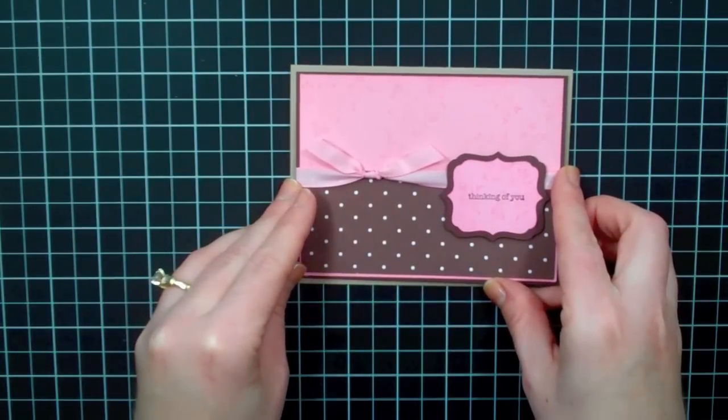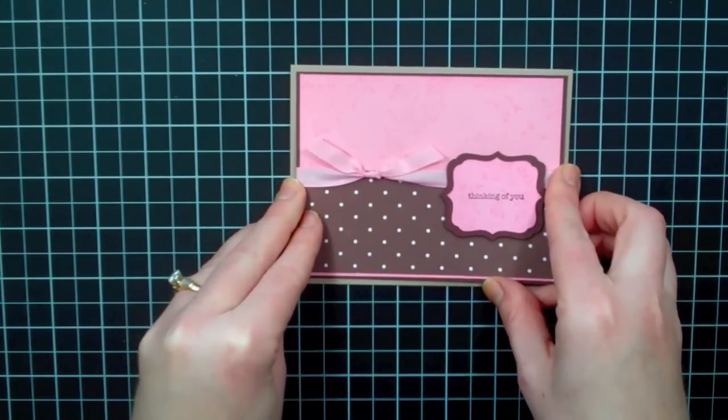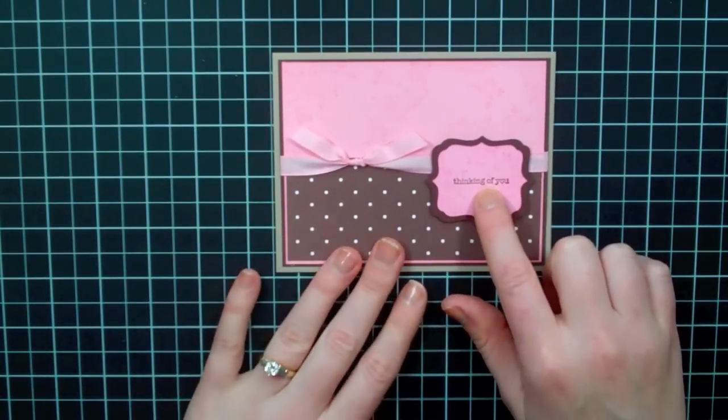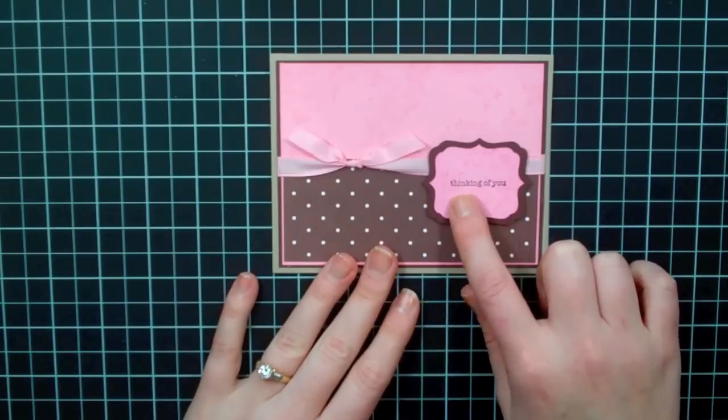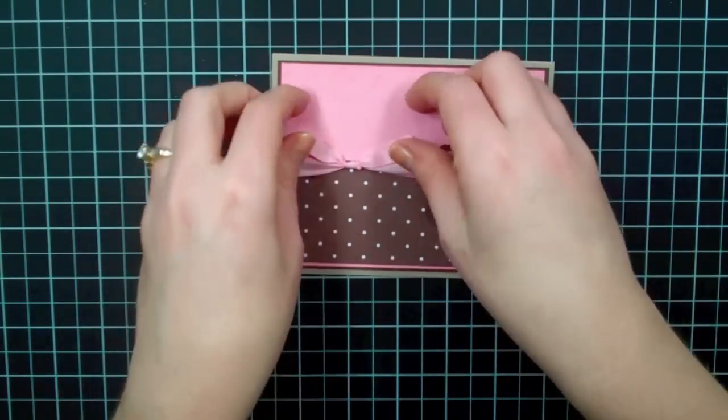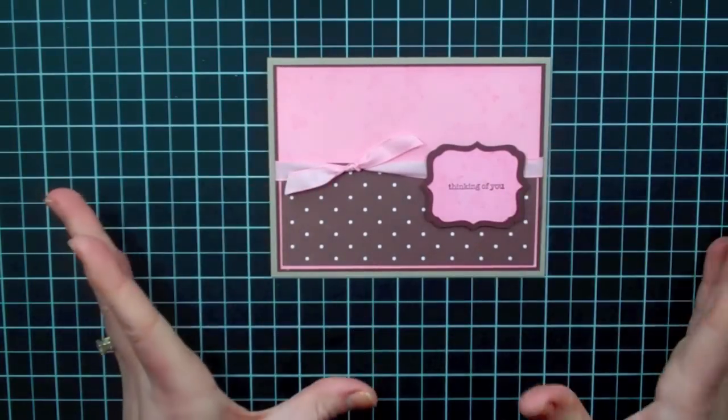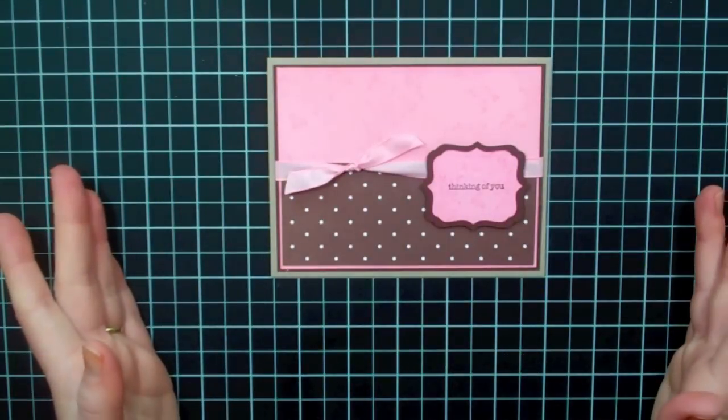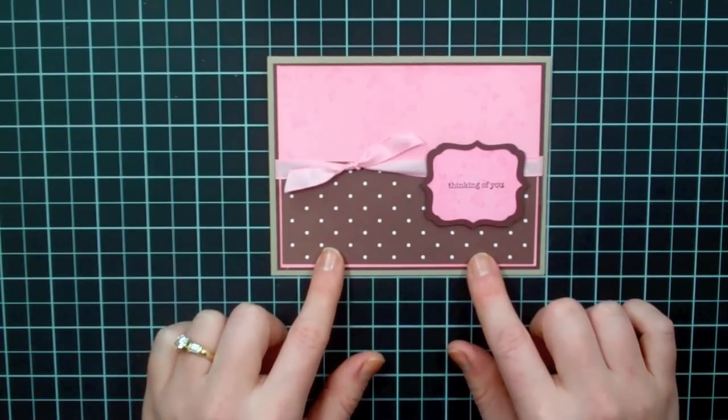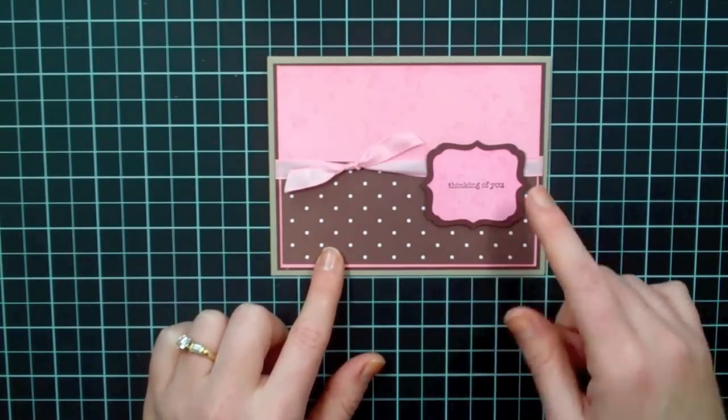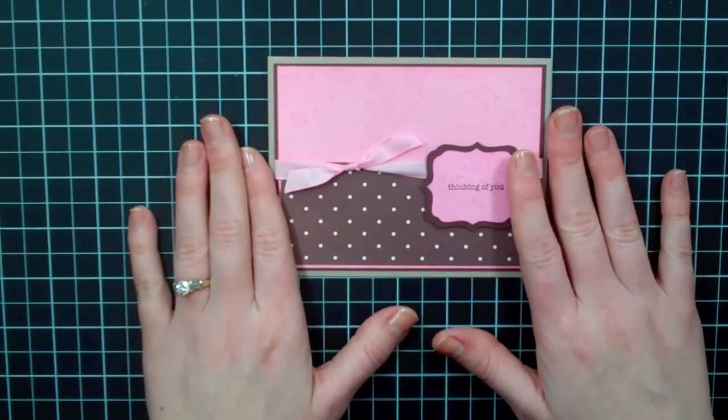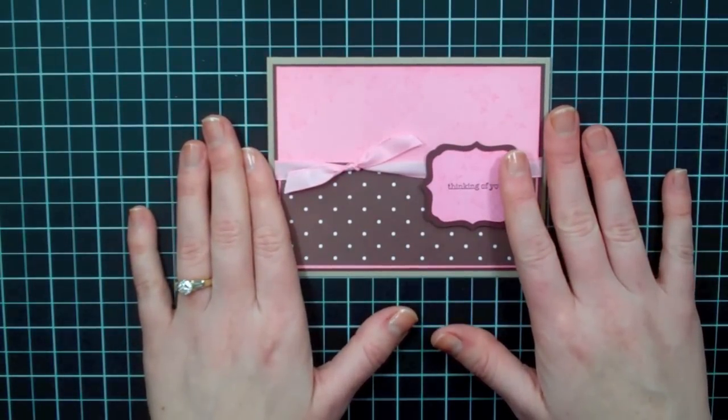And there's your card. And like I said, just change this sentiment and stamp a bunch of different ones—birthday, thinking of you, thank you—and you have a great little gift pack of cards that you can put together very quick and very easy for a friend or sister-in-law or whatever. And maybe I know that my sister-in-law who's getting these doesn't watch these videos, but if she did, she would know that these are for her because she loves pink and brown. But anyway, I will be back soon with another video, and I hope you have a wonderful day. Thanks for watching.